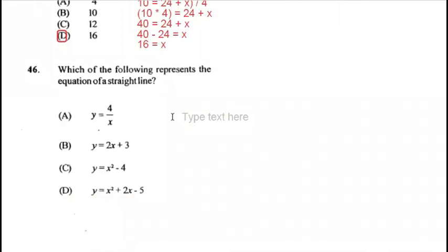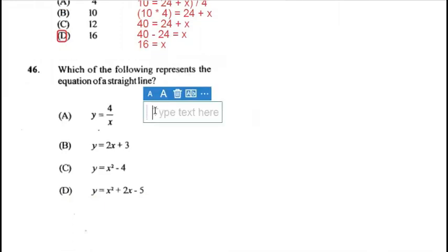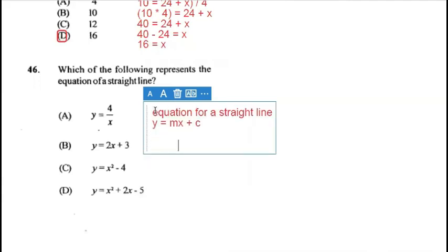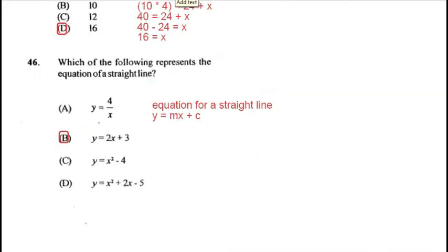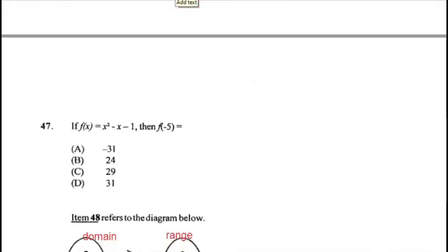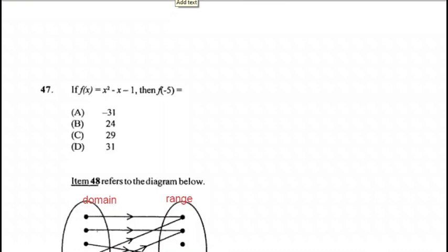Question 46: which of the following represents the equation of a straight line? Remember, the equation of a straight line is y = mx + c. The answer is B, where 2 is m (the gradient) and 3 is c (the y-intercept). Answer for 46 is B.